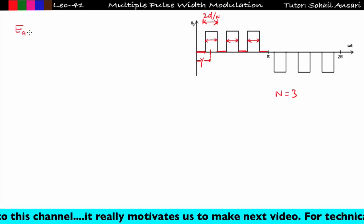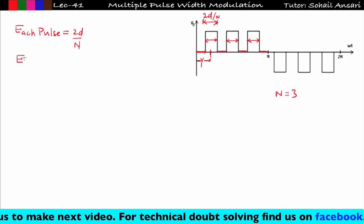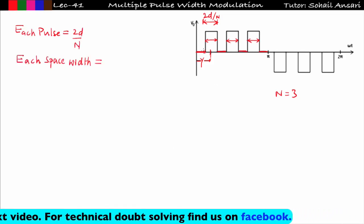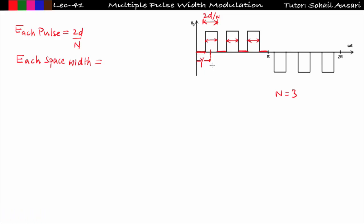Each pulse width is 2d/n. Similarly, each space width equals gamma minus d/n, since d/n is the half of the pulse width. My aim now is to find the value of gamma.